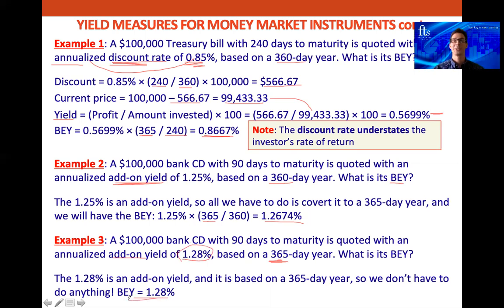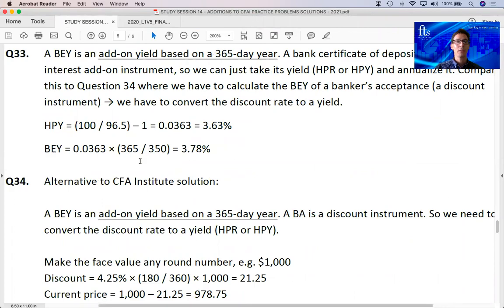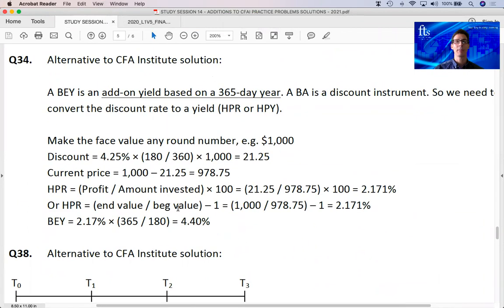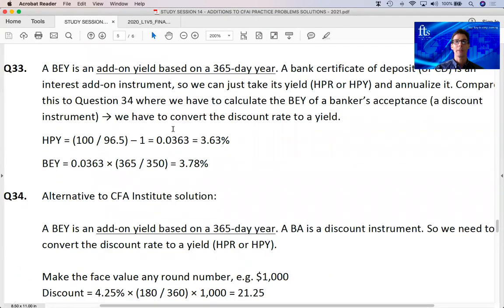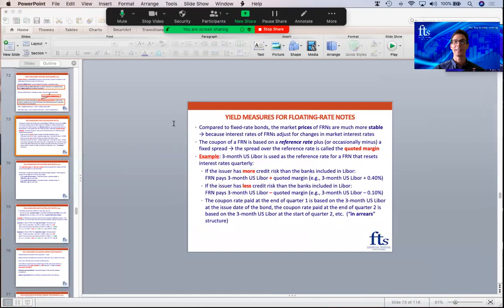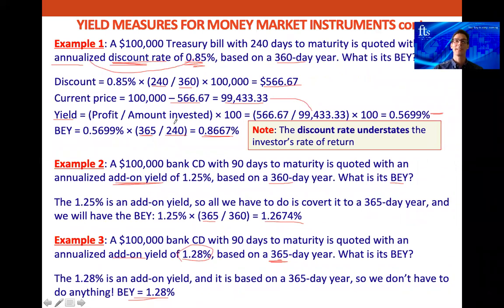That's the end of this class — a nice short class on more yield measures. The actual way the CFA Institute converts a discount rate into a yield uses very complicated, ugly formulas. I find this method much easier. In the CFA Institute practice problems there were two problems, and I did them using the method we've just done on the slide. Just practice these little examples and we'll become very good at them. See you in the next class.